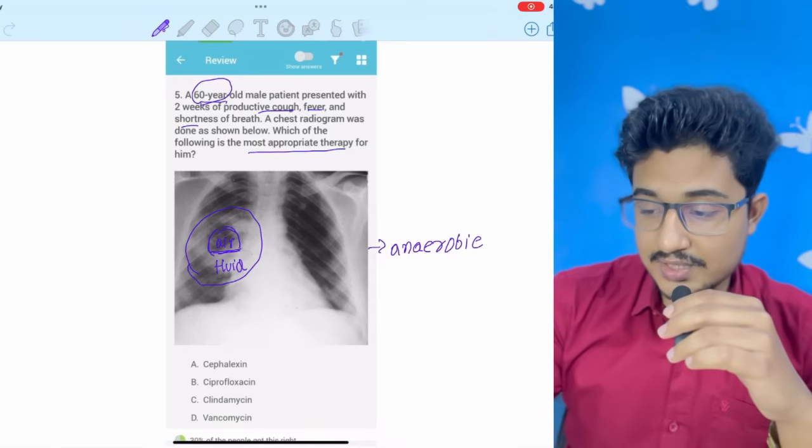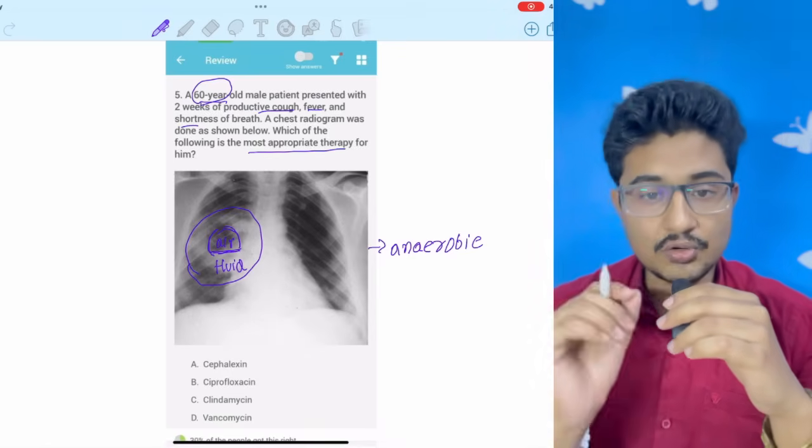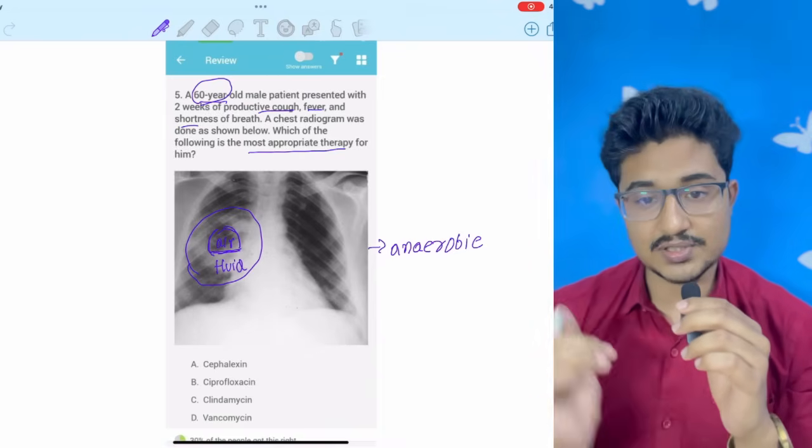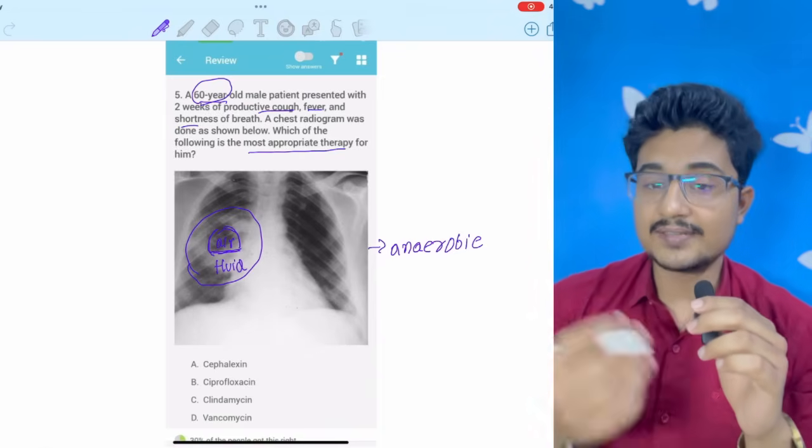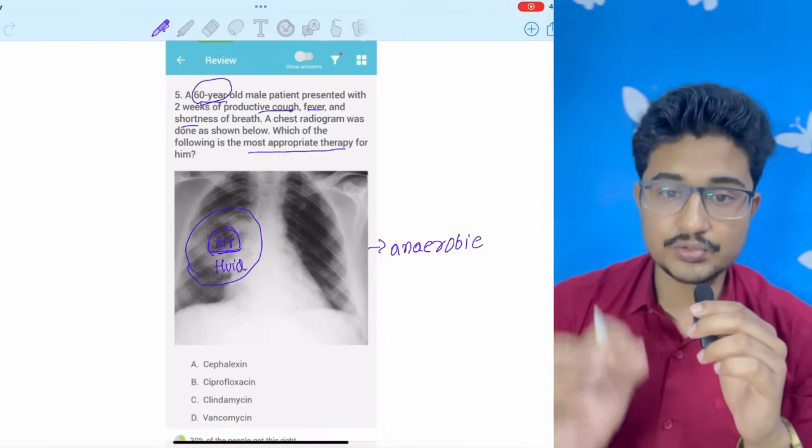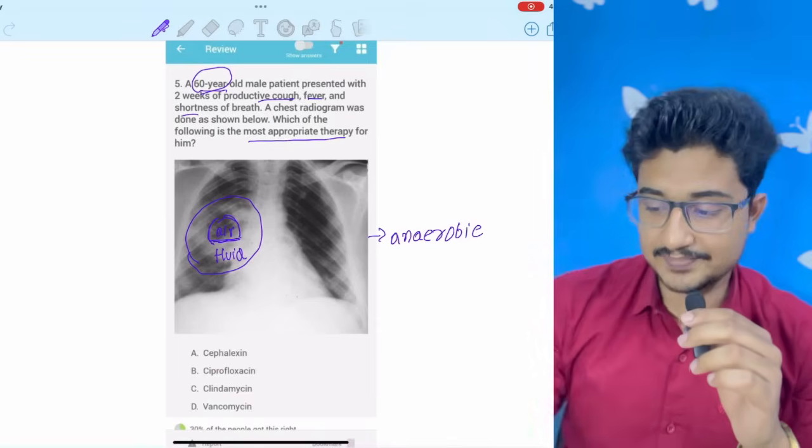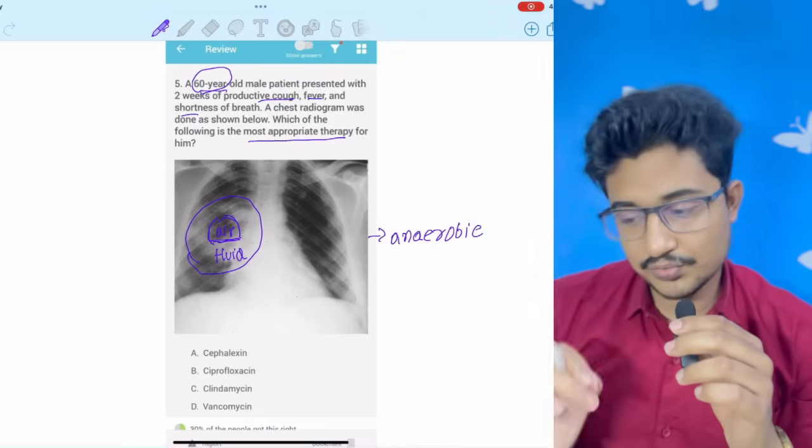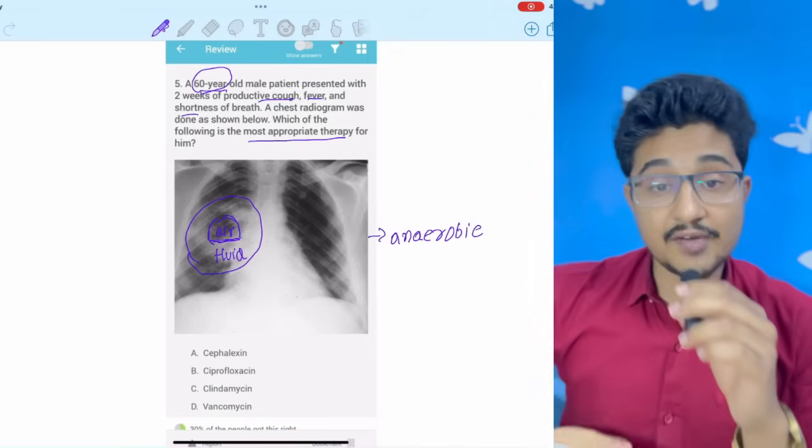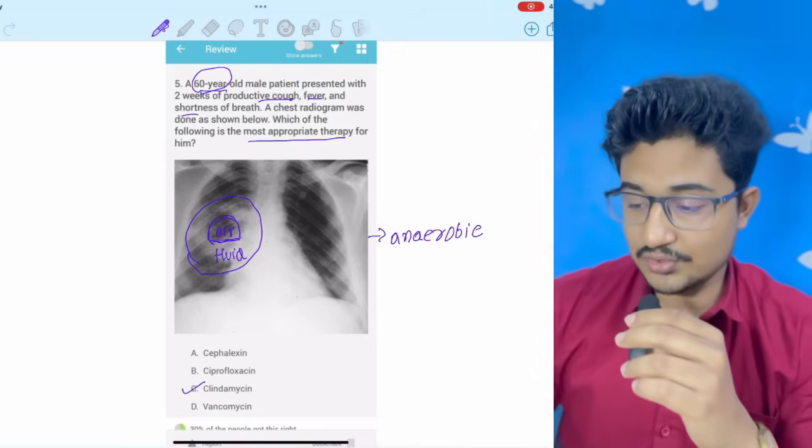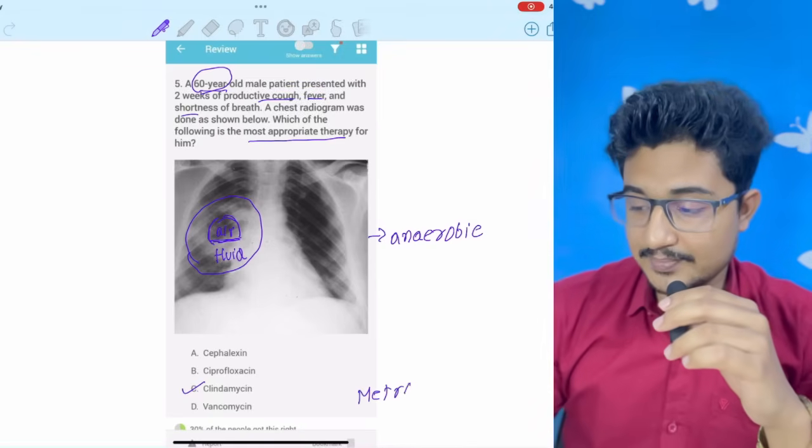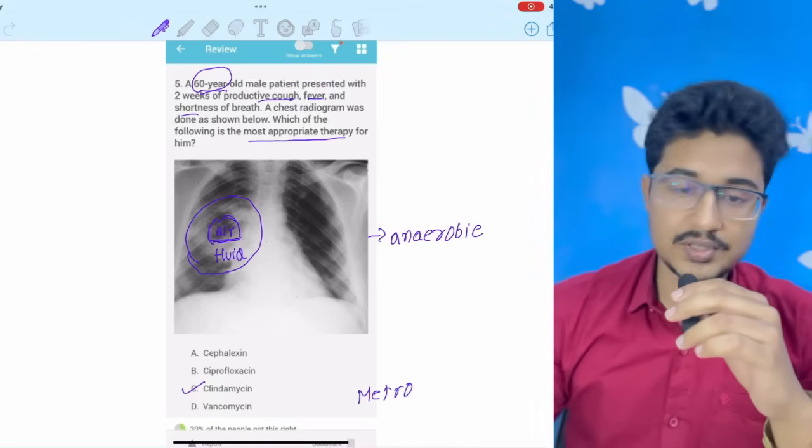And air fluid level is seen in anaerobic infection. Now, the question asked, what is the most important therapy? So, these are called two-layered questions. Means, it is not asking you the diagnosis. You have to make the diagnosis. After that, you have to answer the question, what it has asked. So, in the question, it is asked, what is the most appropriate therapy? So, for anaerobic infections, above the diaphragm, if it is, it is always clindamycin. And below the diaphragm, it is metronidazole.